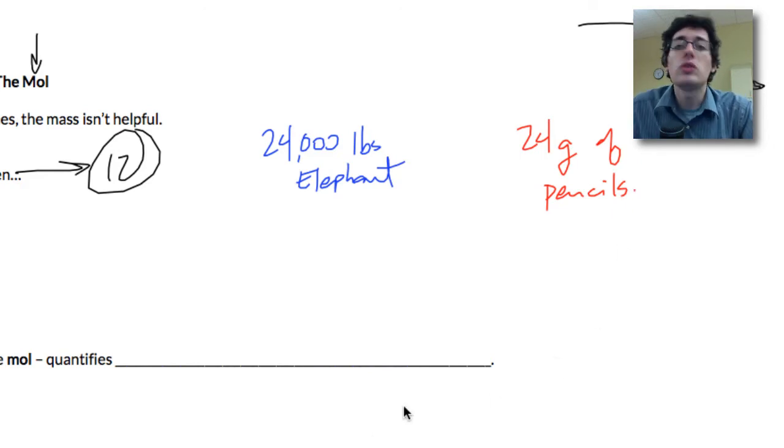Initially I would say what do you have more of? Which individual pieces do you have more of? Well you'd say obviously we have more of the elephant because I've got much more mass there.